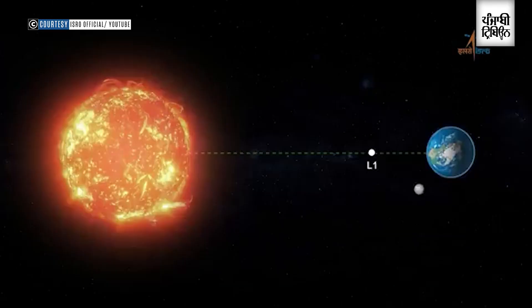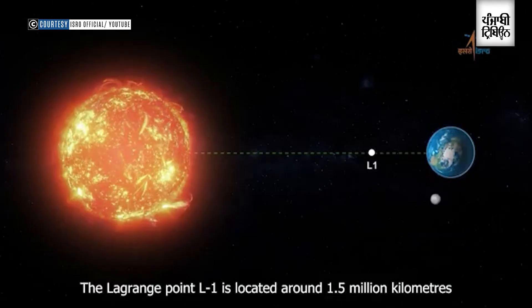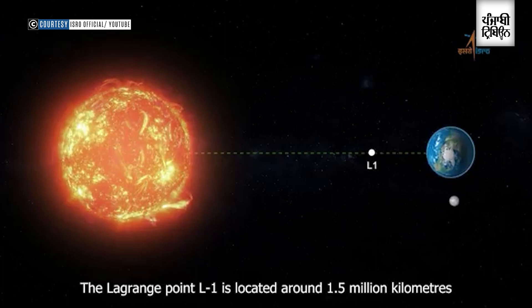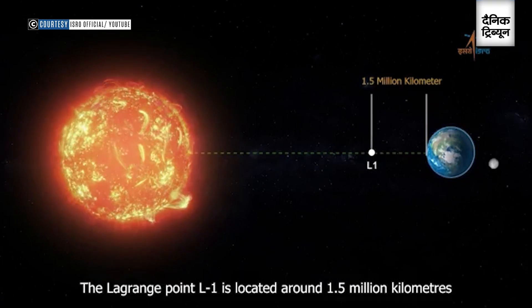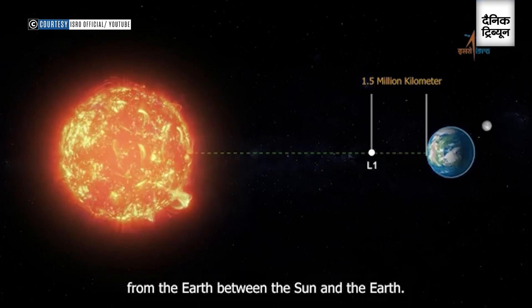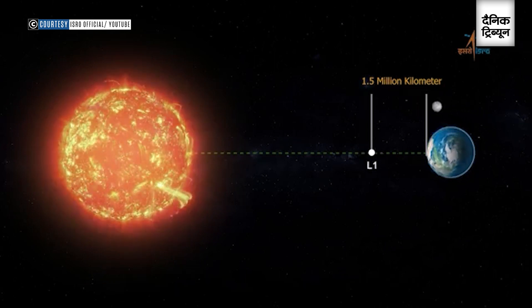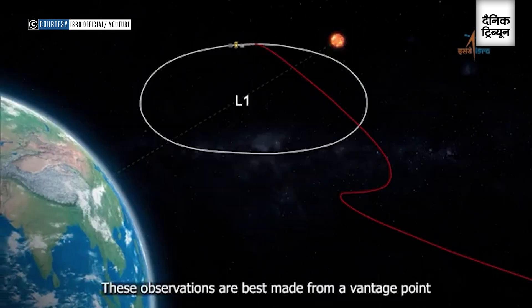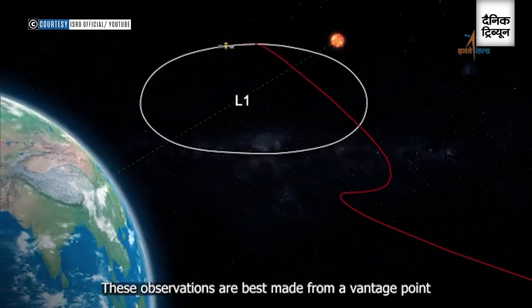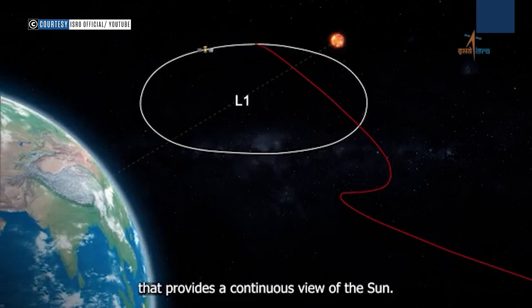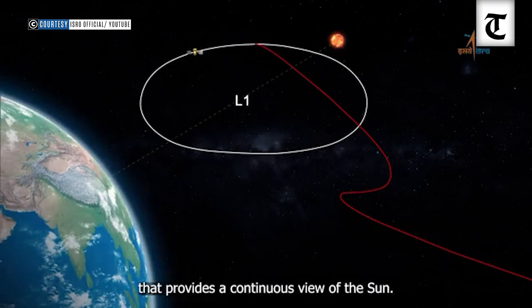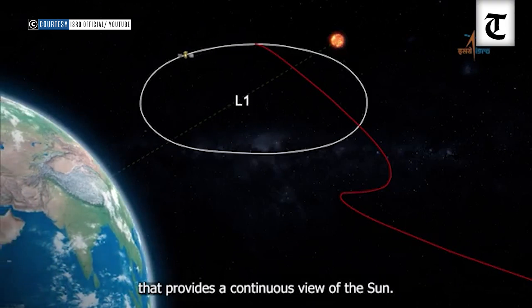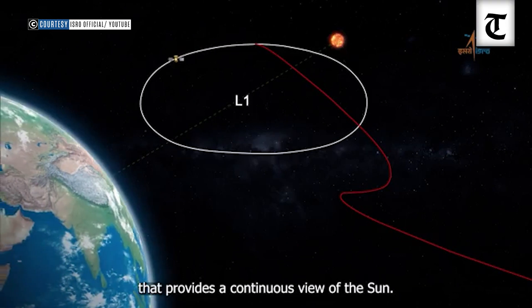In particular, SUIT is going to be looking at the ultraviolet radiation in the 2000 to 4000 Angstrom range, emitted from the lower and middle atmosphere of the Sun. And what we want to look at is how the Sun's atmosphere is coupled, by looking at observations at various heights.